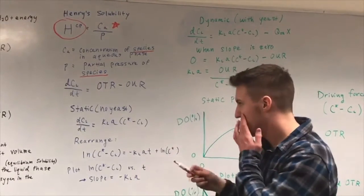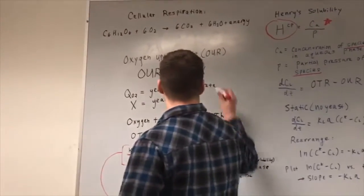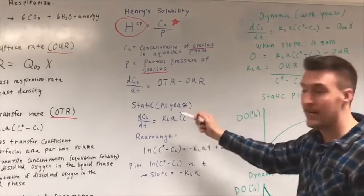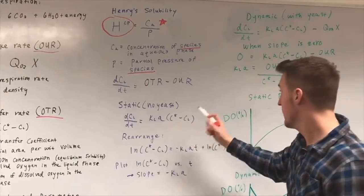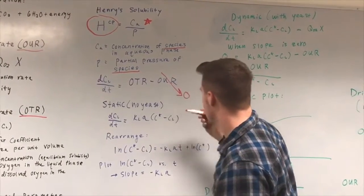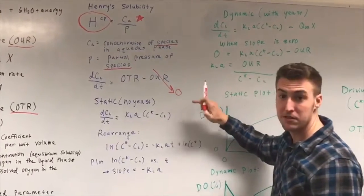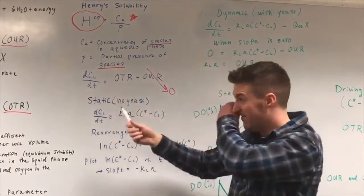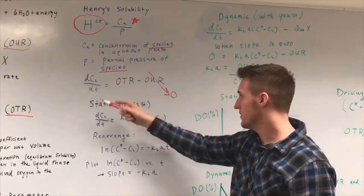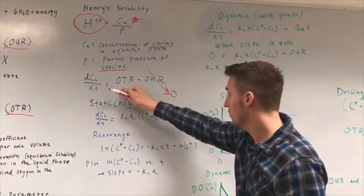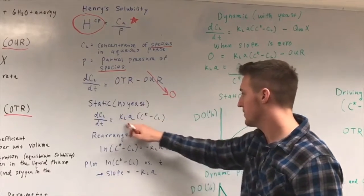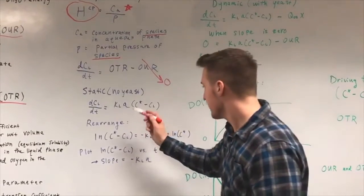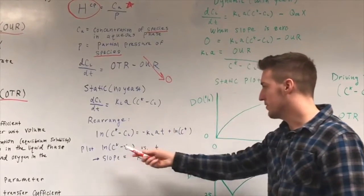The differential equation is the oxygen transfer rate minus the oxygen uptake rate. In the static method with no yeast, the OUR term goes to zero because there is no yeast consuming oxygen, so the change in dissolved oxygen in the liquid phase equals just the OTR.